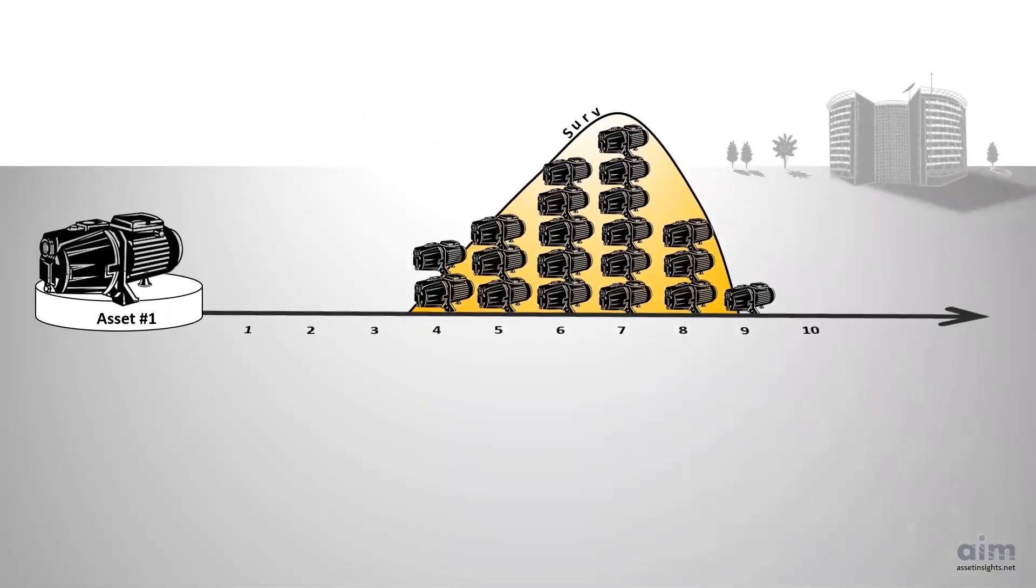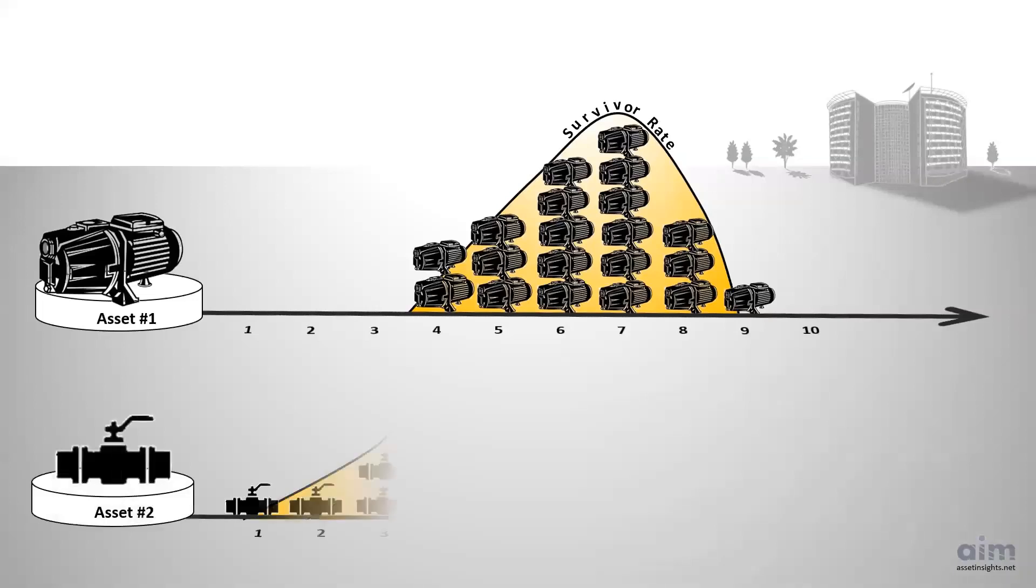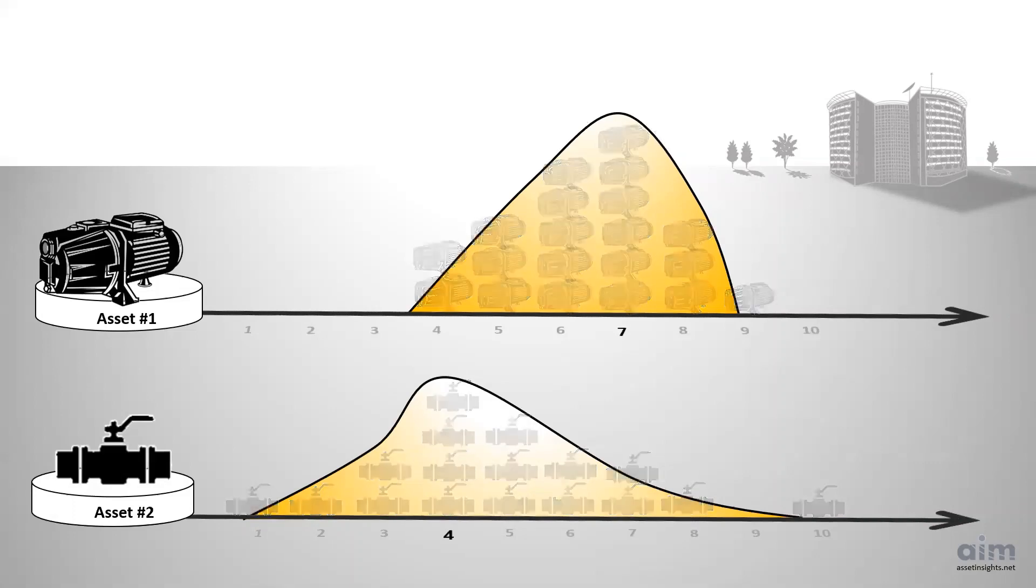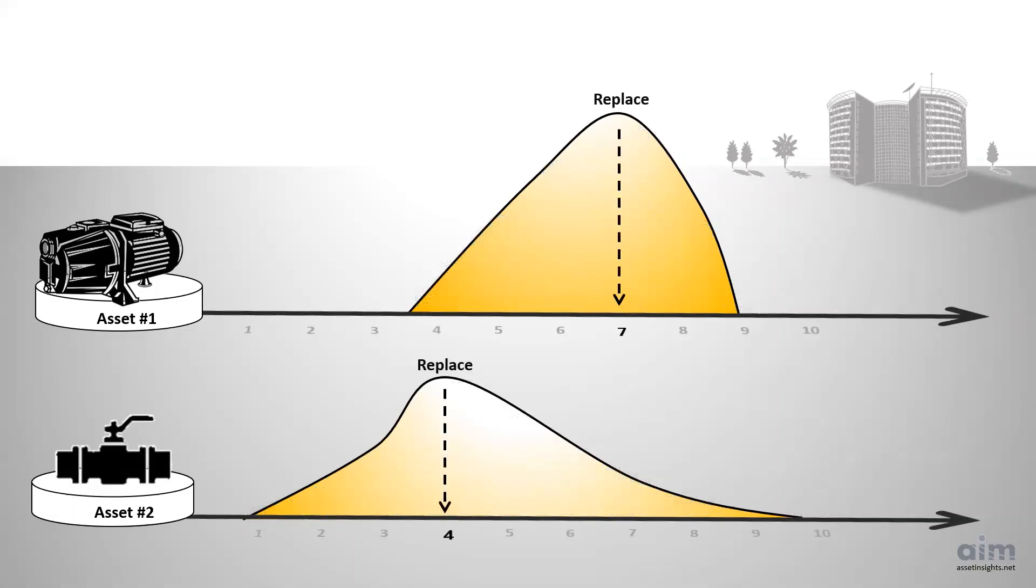The distribution of asset failures is captured in a survivor curve. Each pertinent asset class undergoes the same type of analysis. The modal year at the peak of the survivor curve provides the most likely year for replacement of the asset.